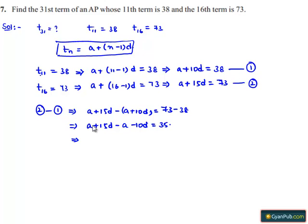This implies a minus a is 0, and 15d minus 10d is 5d equals 35, which implies d equals 35/5, that is 7. So we got d = 7.